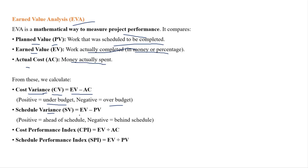Schedule Variance (SV) = EV minus PV. If the schedule variance is positive, you are ahead of schedule — meaning you completed more tasks than planned in the given time, work is efficient. If negative, you are behind schedule — for example, 4 tasks were planned for 4 days but you only completed 2 tasks. That means you are behind and will not complete on time.